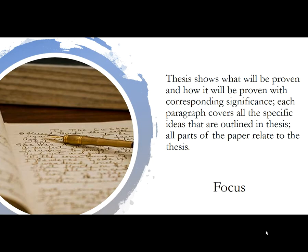I want to walk you through the rubric for this piece. The first section of the rubric is focus. What I'm looking for here is a clear thesis — something that tells me what you're going to prove and how you're going to prove it, with corresponding significance. Each paragraph is going to talk about your thesis; all parts of your paper are going to relate to your thesis. There needs to be a clear sense of direction and intent in your writing. If there are portions of the paper that don't relate to the rest, or if you get caught in plot summary or diversions, you'll lose points on focus. If everything is cleanly aligned with a clear direction, you'll do well on this section.